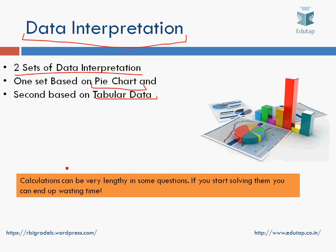You have to remember that calculations can be very lengthy in some questions. The secret for success in RBI Grade B Phase 1 examination is that you have to pick and choose — you don't have to attempt the questions in order. There can be questions where the calculations are very lengthy, and if you get stuck you can end up wasting a lot of time.